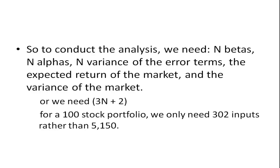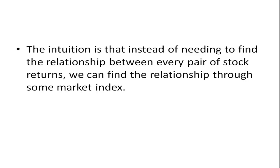For a smaller portfolio, conducting the analysis requires n betas to calculate portfolio beta, n alphas to calculate portfolio alpha, n variances of the error terms, plus the expected return of the market and the variance of the market — that's 3n plus 2 inputs. For a 100-stock portfolio, we only need 302 inputs rather than the 5,150 inputs of the full Markowitz variance-covariance analysis. The intuition is that instead of finding the relationship between every pair of stocks, we find each stock's relationship to a market index.